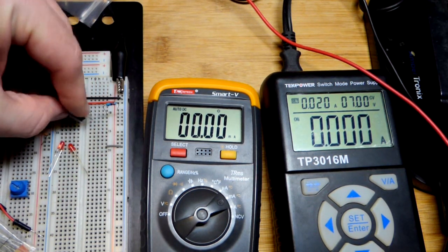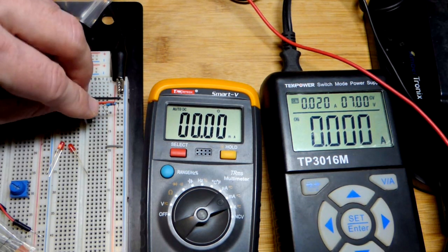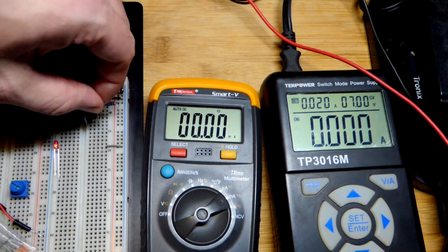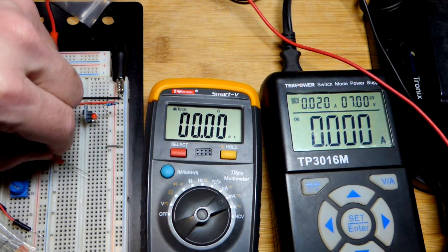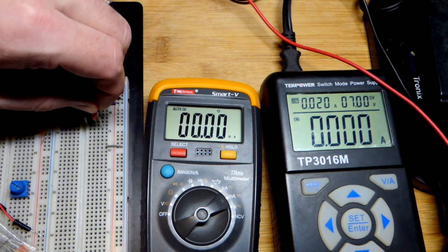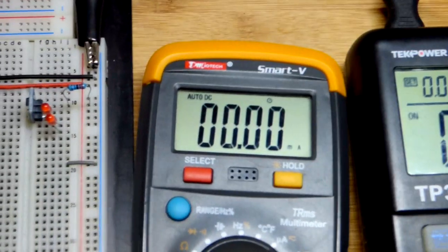Now we'll put it in the other direction. We already saw that with the LEDs, we got the same amount of current. That should be true with the resistor too. As we change the load, as long as you put this in the right way and the LEDs in the right way, you should get a reliable current.